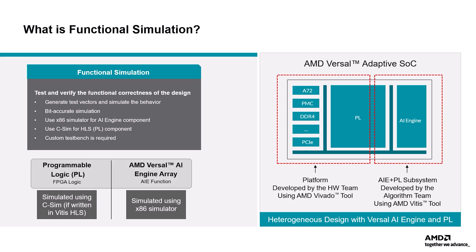To functionally simulate a heterogeneous design that has components of both Versal AI engines and HLS modules targeting the programmable logic, the X86 simulator provided by AMD must be used for the Versal AI engine portion of the design, and CSIM for the HLS component targeting the PL portion. Also, a custom test bench is typically required to be created to functionally simulate the design.